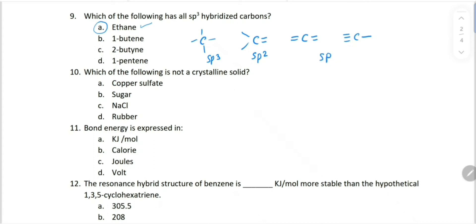Which of the following is not a crystalline solid? Copper sulfate is crystalline solid. Sugar is crystalline solid. Sodium chloride is also crystalline. Rubber - it is not a crystalline solid, that is amorphous solid. So correct choice is D.